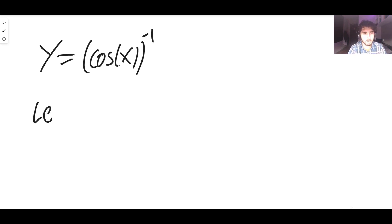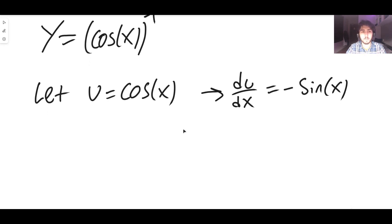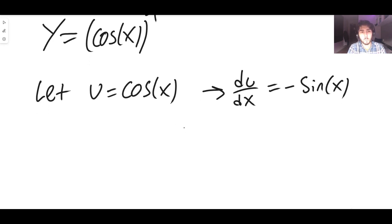So first thing we do for the chain rule is we let u equal the inside function which is cos x. We can then take du/dx which is minus sin x. Okay here's the thing though if y is cos x to the minus one and u is cos x then y is just u to the minus one and that means that dy/du is minus u to the minus two.